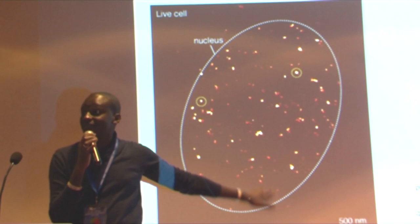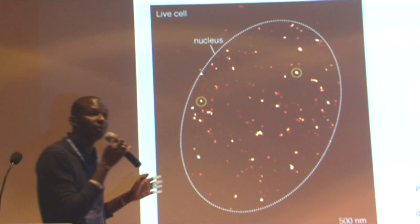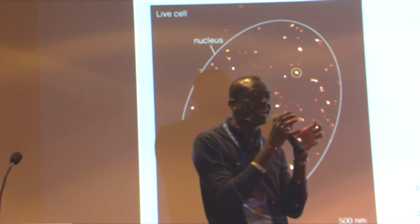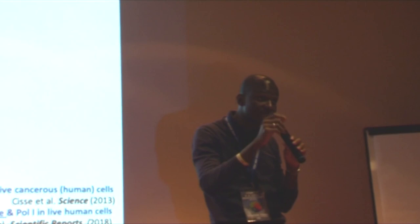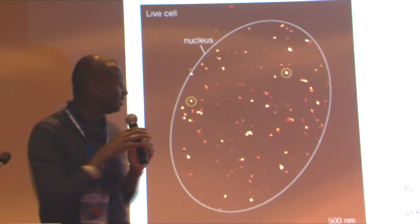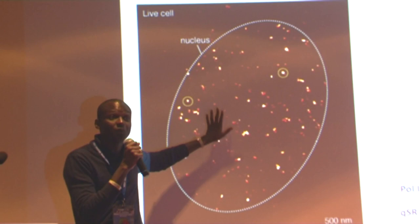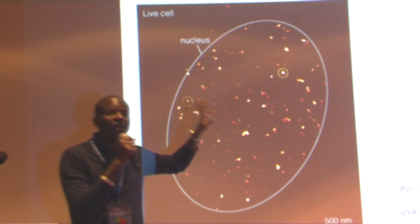With TC-PALM, we look at the temporal history of detections within a cluster. If a cluster was always there and you stochastically activated it one molecule at a time, the temporal history should obey a statistic consistent with that stochastic process. To know what a stable cluster looks like, we can do the same imaging in a fixed cell — that gives us a calibration of the temporal history for a cluster with no dynamics.